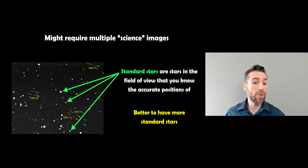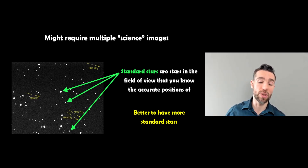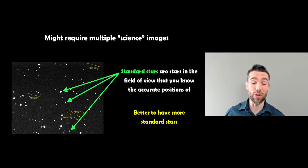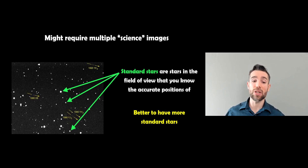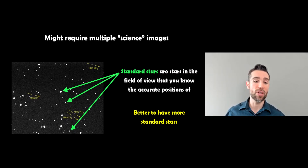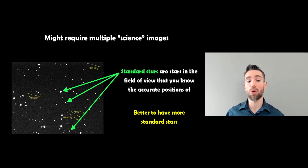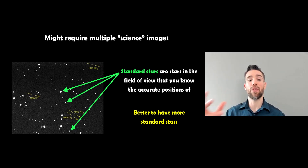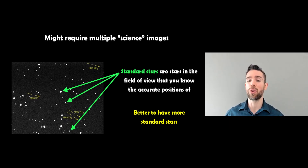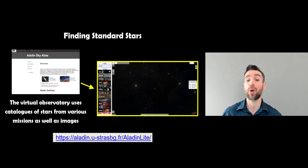You might also want to take multiple science images. If you are imaging something like an asteroid it's going to be moving across the frame, so you might want to track its movement — and any object really might be moving, even stars. You also need to pick out various standard or reference stars. These are stars with very precise coordinates — they are well studied and have a well-known position — and you use those as reference points to find the coordinate of your object. The more of those stars you have, the better.